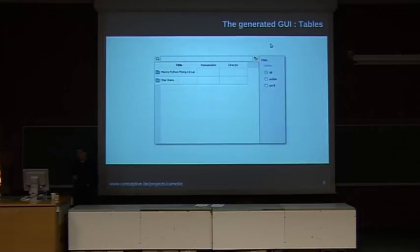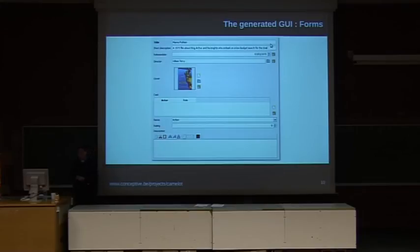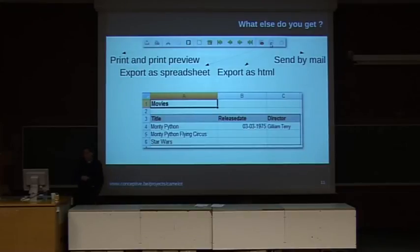Now we're ready to launch the application. We start main.py and click the movie section to get a list of all movies. Notice you can filter this list on the genre of the movies and search using the text box on top. By default, the search widget searches through all text fields of your objects. If you click one of the movies, you get the standard form view with image widgets, rich text widgets, and one-to-many and many-to-one widgets for relations. In the toolbar you get functions to print tables and forms, export them to spreadsheets or HTML, or send them by email to your friends.